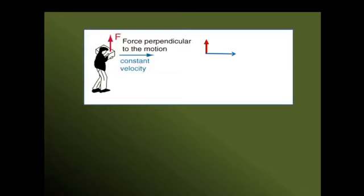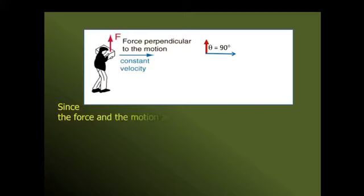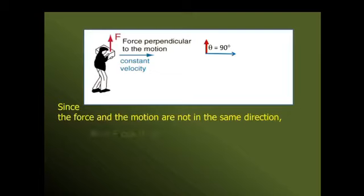The body is placed on a surface. Now we have to perform the calculation. We use force F and displacement D in the same direction. We have to use the formula W = F×D. Since the force and motion are not in the same direction, we must use the component of force.